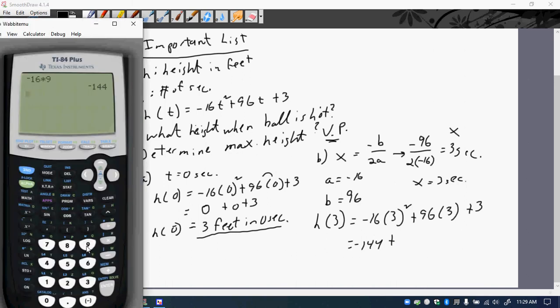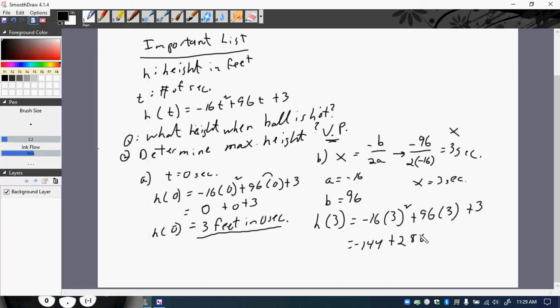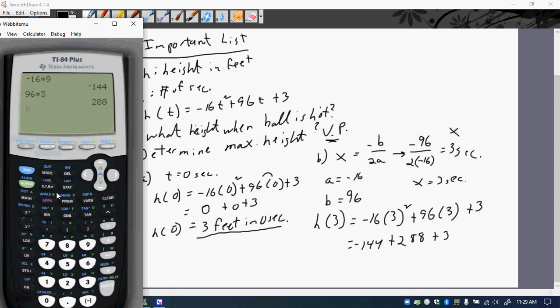And I'm going to do 96 times 3, which is 288. So 288 plus 3. And so now I'm going to add them all up. So negative 144 plus 288 plus 3. I get 147 feet.